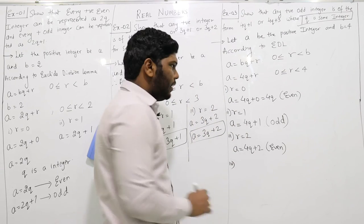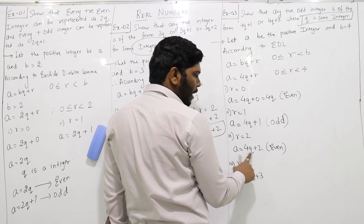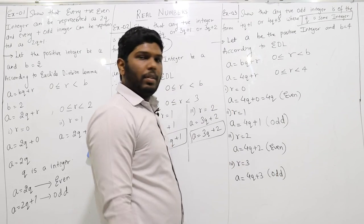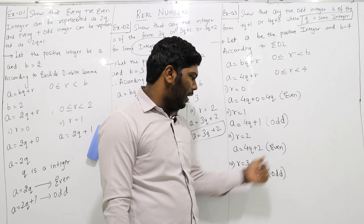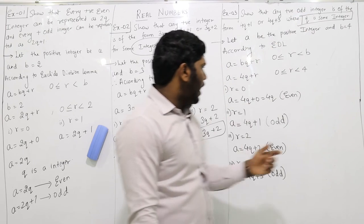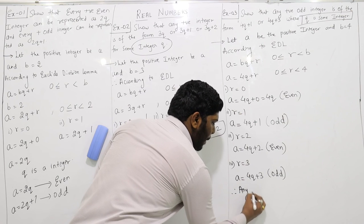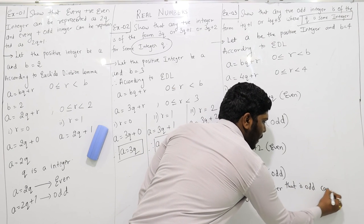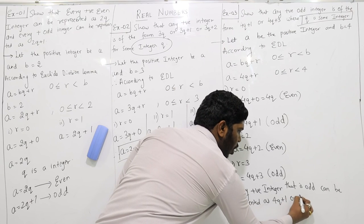In the last case, r is equal to 3, so A equals 4q plus 3. We have seen 4q plus 2 is even, so adding one more gives 4q plus 3, which must be odd. Out of these four cases: the first (4q) is even, the second (4q plus 1) is odd, the third (4q plus 2) is even, and the fourth (4q plus 3) is odd. As the question requires, 4q plus 1 and 4q plus 3 are odd, so any positive odd integer can be represented as 4q plus 1 or 4q plus 3.